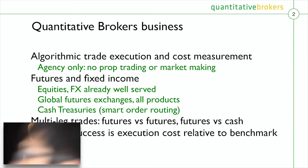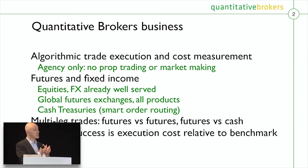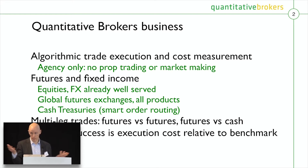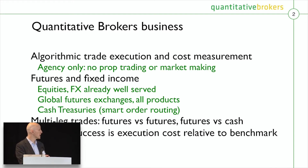The markets we're in are futures and fixed income — bonds and futures around the world. The reason my partner and I started this company about ten years ago was we had been in algo execution in equities. That market was saturated and very well served, but nothing was happening in futures or bond markets. We're now live on futures exchanges more or less around the world — Asia is in progress — and we cover all products on those exchanges, as well as cash treasuries.